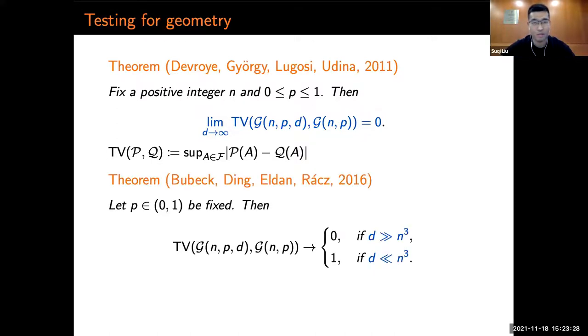Later in 2016, Bubeck, Ding, Eldan, and Racz proved the following phase transition phenomena for G(n,p,d). When the dimension is much higher than n^(2/3), the total variation distance converges to zero. And when the dimension is much lower than n^(2/3), the total variation distance goes to one. In other words, G(n,p,d) goes through a phase transition from having detectable geometry to losing geometry at dimension of order n^(2/3).